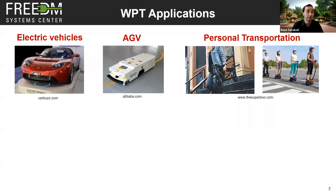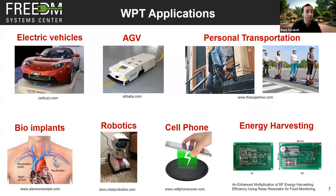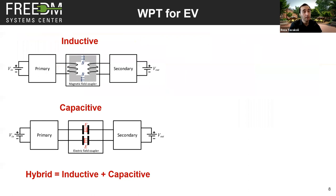The main focus of this presentation is regarding these transportation applications. However, there are other applications like wireless power transfer for bioimplants, charging robots, charging cell phones, and energy harvesting for RF circuits. WPT uses two main methods: inductive, working with magnetic fields, and capacitive, working with electric fields, or a hybrid combination. There is also the distinction between stationary chargers and dynamic chargers — stationary charges while the vehicle is parked, while dynamic transfers power to a moving vehicle.